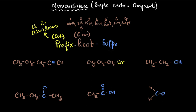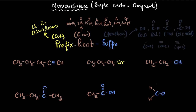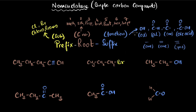Finally, you have a suffix — how you end the name — which depends on your functional group. If you have alcohol as a functional group, you end with 'ol.' If you have an aldehyde, you end with 'al.' If you have no functional groups and a double bond, you end with 'ene'; a triple bond gives 'yne'; and only single bonds gives 'ane.'